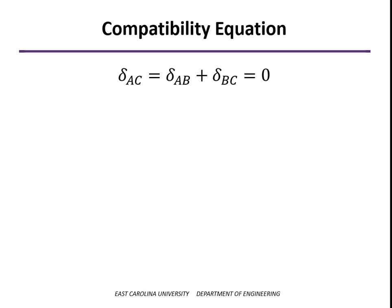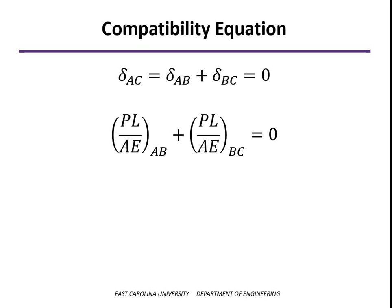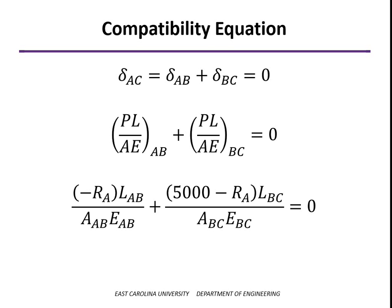Our compatibility equation is that the total change in length equals zero. So PL over AE for both segments added together equals zero. This is where it's critical to get the signs correct. For PAB we put in minus RA, and for PBC we put in 5,000 minus RA. The only unknown in this equation is the reaction force RA, so we can solve for that and then solve for the stresses.